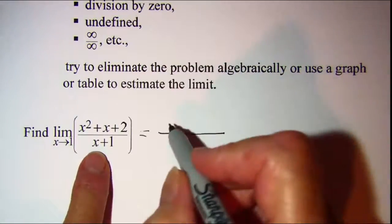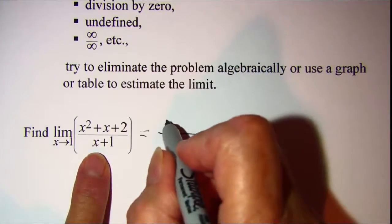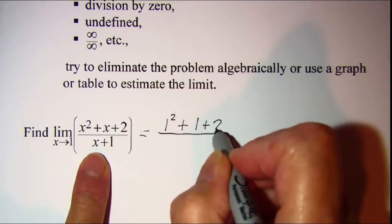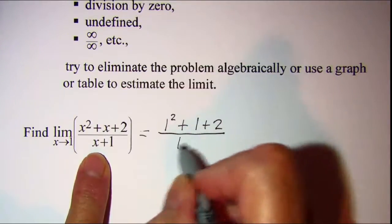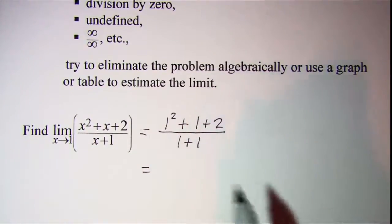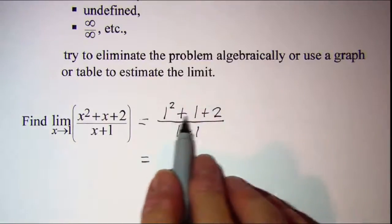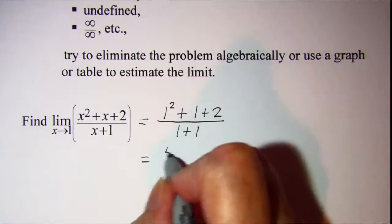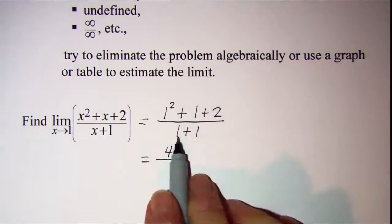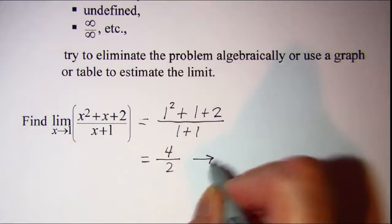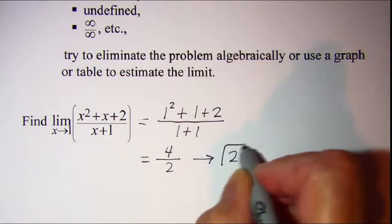We'll put 1 in for x. So we have 1 squared plus 1, 1 plus 2, divided by 1 plus 1. This is equal to 1 plus 1 is 2, plus 2 is 4, over 1 plus 1 is 2. So this gives me 2 as my limit.